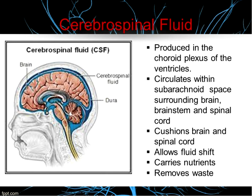Cerebrospinal fluid is produced in the choroid plexus of the ventricles. It provides cushioning for the brain and spinal cord and allows for fluid shifts from the cranial cavity to the spinal cavity. It also carries nutrients. We produce CSF continuously — about 500 to 700 cc per day, or about 20 to 30 cc per hour. The number to remember is 20 to 30 cc per hour, because we'll reference it when we discuss monitoring increased ICP. At any given time, the ventricles and central canal hold about 135 milliliters of CSF.